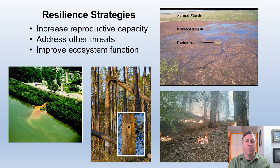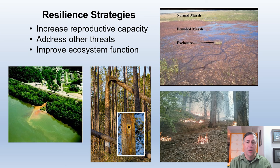Resilience strategies improve a system's ability to bounce back from a disturbance. This can be done by reducing other ecosystem stressors, like restoring native vegetation, limiting pollution, reducing hazardous fuels and thereby preventing catastrophic fires, and controlling invasive species and pathogens. Wildlife can be helped by providing things like nest boxes if needed.